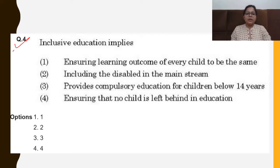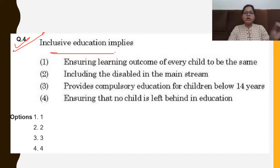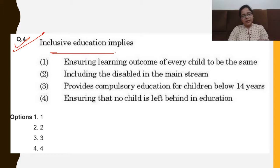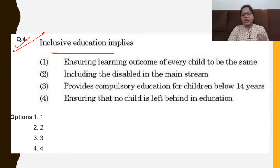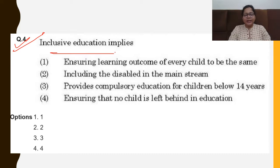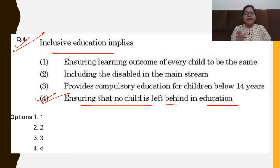Question 4: Inclusive education implies — options are: (1) ensuring learning outcomes of every child are the same; (2) including the disabled in the mainstream; (3) providing compulsory education for children below 14 years; (4) ensuring that no child is left behind in education. The correct answer is option 4 — we must ensure that every child gets education and no child is deprived of it.